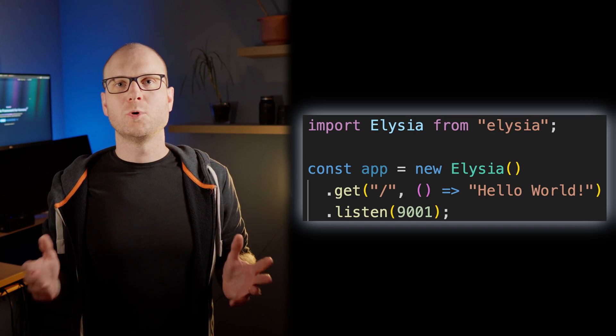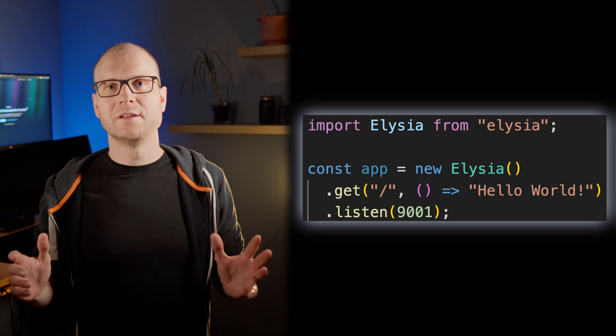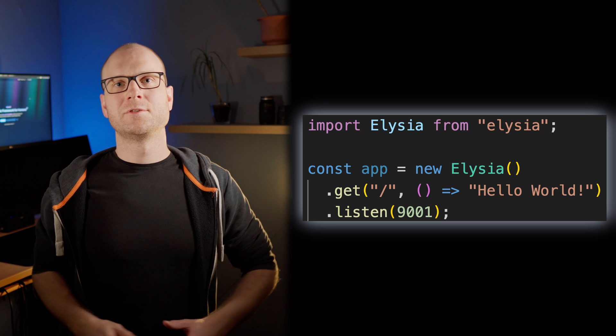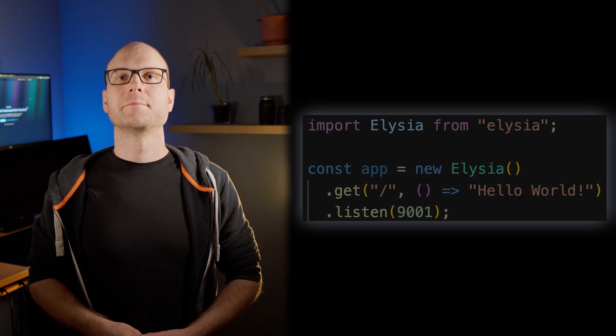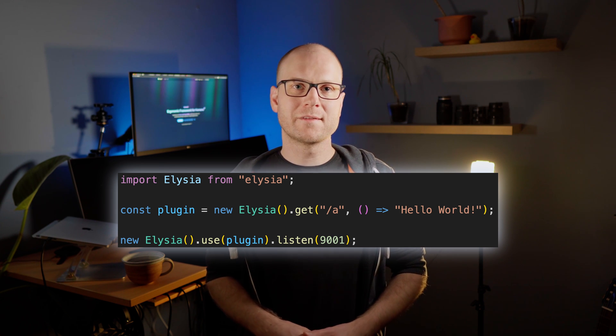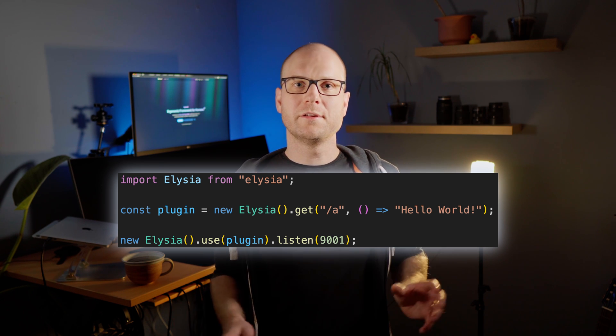It felt really straightforward to use. In this basic hello world example, we create an Elijah instance, add a route handler, and tell it to listen to a certain port. Creating plugins, which make it all scalable, is very easy as well. A plugin is nothing more than another Elijah instance that we use within our main instance. This also means that we can turn any plugin into a standalone server when we call the listen method on it.